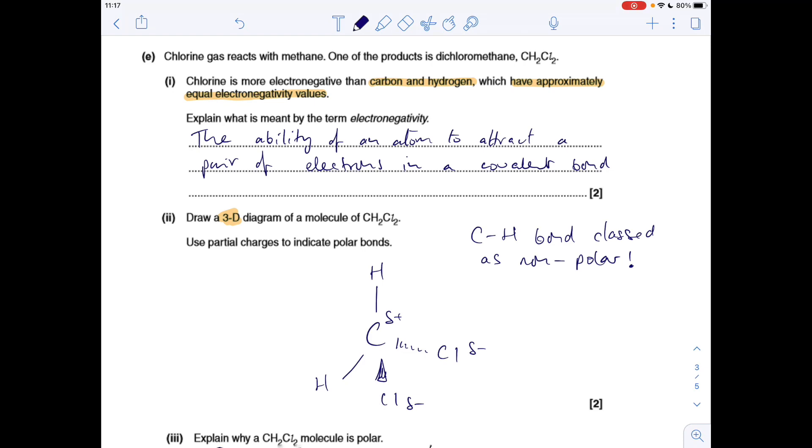First of all, 3D diagram. Well this is going to be a tetrahedron, so we've got that central carbon, and then I would always draw my two solid lines and then my solid wedge and then my dashed wedge. And then just put the atoms on. You can put them anywhere you want but I've gone for the two hydrogens there and there, and the chlorines there and there. If we refer to this information now that I've highlighted, chlorine's more electronegative than carbon and hydrogen, so that's why the delta minuses are on the chlorines. But we are told that carbon and hydrogen have approximately equal electronegativity values.